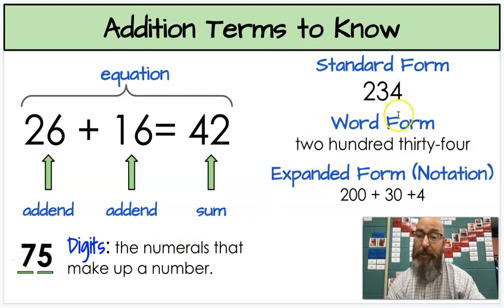There's also three different ways we can write a number. We have the standard form, which most of you are pretty good at, 234. We have the word form, two hundred thirty-four. Don't forget your hyphen in between the tens and the ones. And then we have expanded form or expanded notation. And we can break that 234 into 200 plus 30 plus 4. You actually really need to know that for what we're doing today, just like you really needed to know that for adding on an open number line.